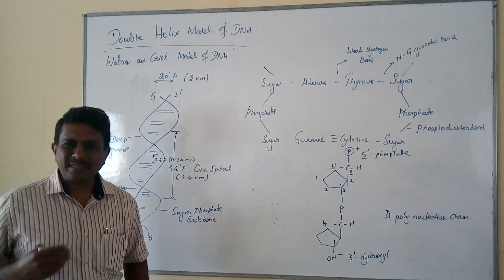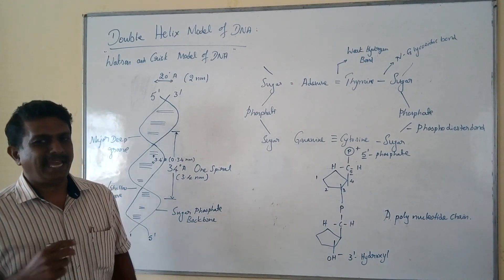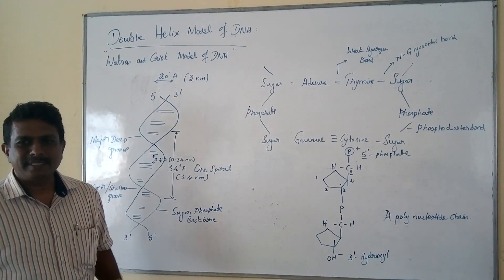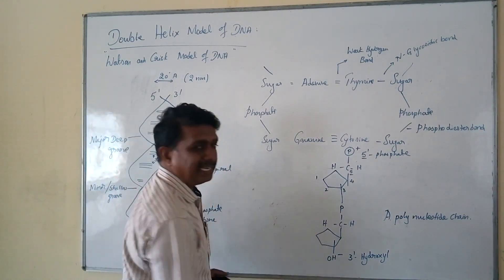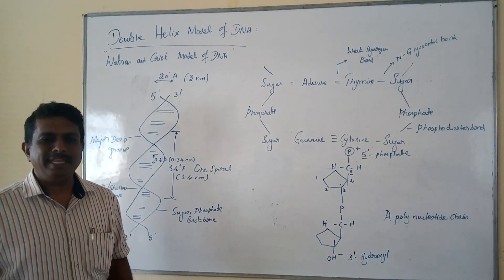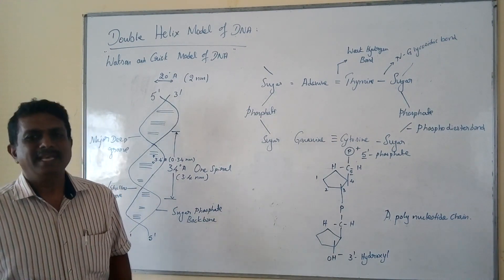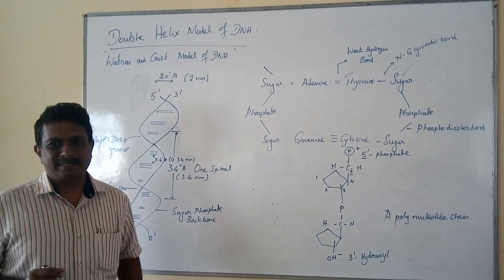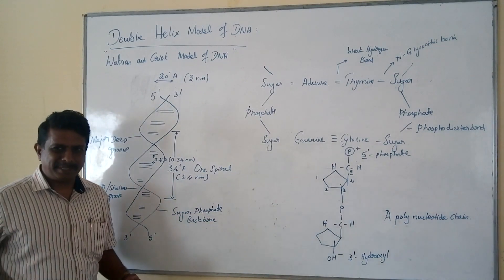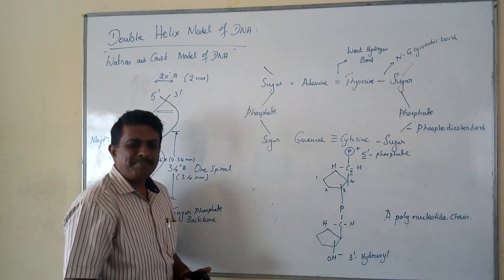According to Watson and Crick, the double helical model of DNA is characterized by the presence of a helically twisted double chain of polynucleotide type, characterized by the presence of many nucleotides. Because of the presence of many nucleotides, it is said to be a macromolecule. One strand has a 5' end characterized by the presence of a phosphate group systematically attached to the fifth carbon atom of the pentose sugar derivative.